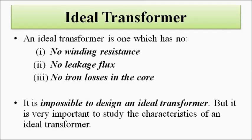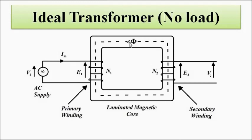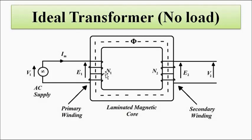An ideal transformer is one which has no winding resistance, no leakage flux, and no iron losses. The basic design includes a laminated magnetic core, a primary winding, and a secondary winding. The AC supply input is connected across the primary winding. Because of the current flow through the primary winding, a flux is set up. This flux links with both the primary and secondary winding — that is the useful flux, called the mutual flux.